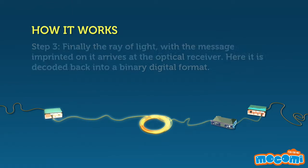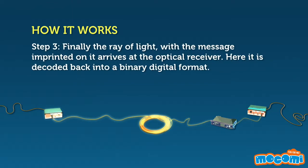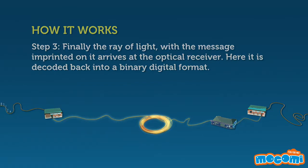Finally, the ray of light with the message imprinted on it arrives at the optical receiver, where it is decoded back into a binary digital format.